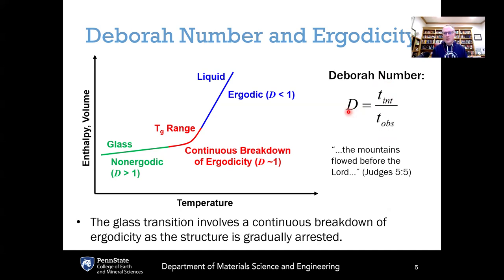Why is this called the Deborah number? It is a reference to the Old Testament, the book of Judges, chapter 5, verse 5, where one translation says 'the mountains flowed before the Lord' — a quote from the prophetess Deborah. In terms of physics: if we go hiking or skiing on mountains, we do so assuming the mountains won't flow, because we observe on a timescale of minutes or hours. Mountains do in fact flow — continental drift, erosion — but on a geological timescale much longer than a hike.